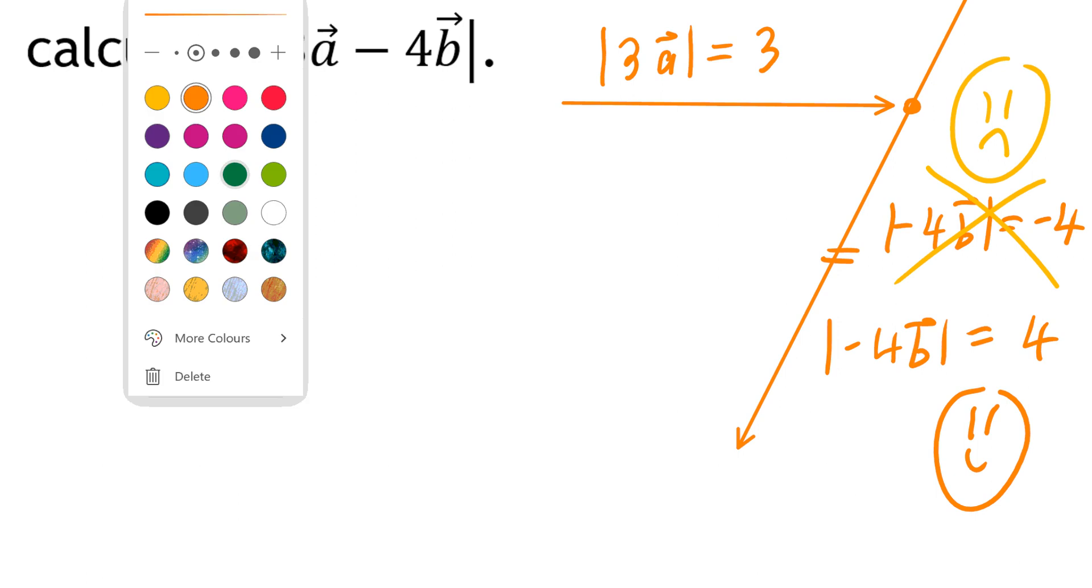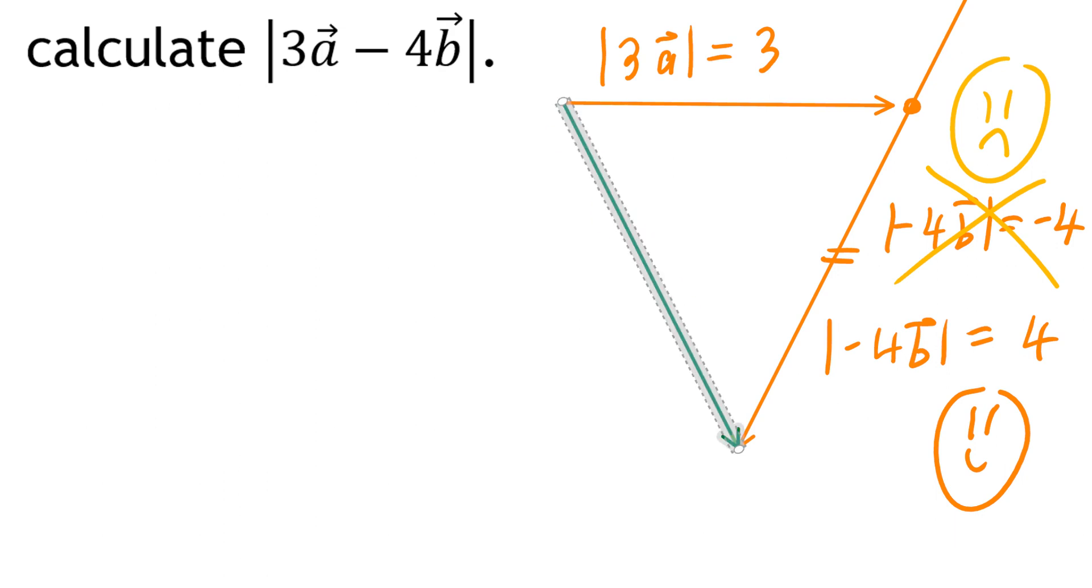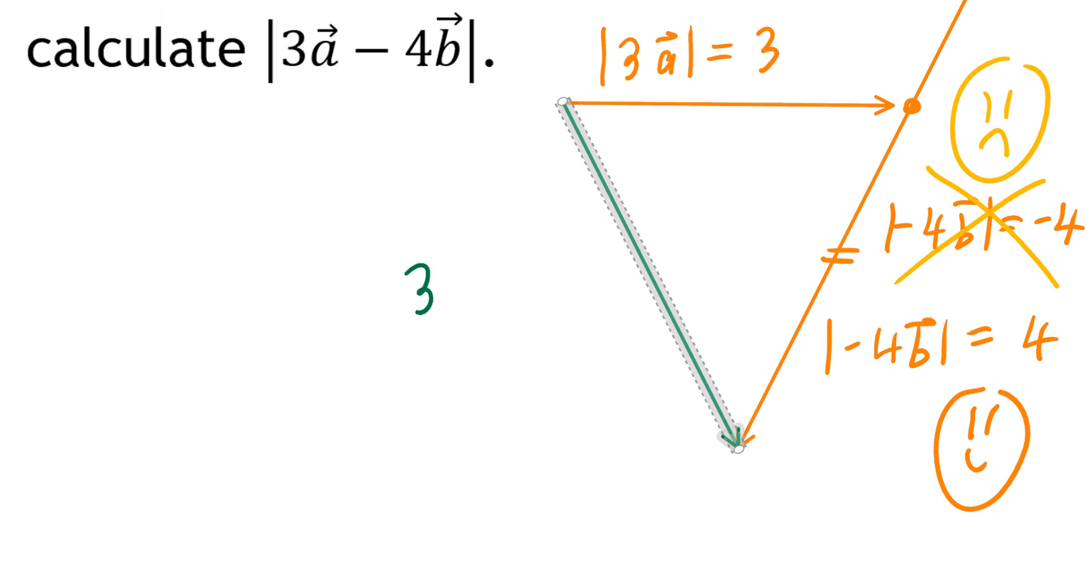Now, I'm going to use a slightly different color. I want to show you the resultant vector. We're looking at this vector in green. And this is going to be 3 times vector A minus 4 times vector B. And we're looking for the magnitude. We don't need to know the direction. We just need to know the magnitude.